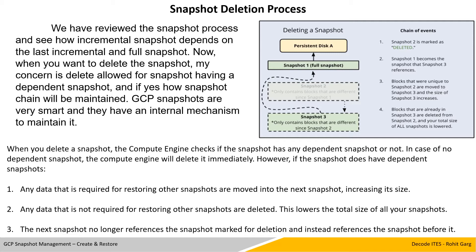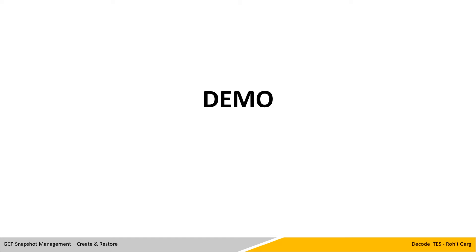This lowers the total size of your snapshots. The next snapshot no longer references the snapshot marked for deletion. Considering that this snapshot is part of a chain and has dependent snapshots, GCP copies all data from this snapshot to the next snapshot and relinks the pointers for unchanged data. Let's start with the demo session on GCP snapshot management.